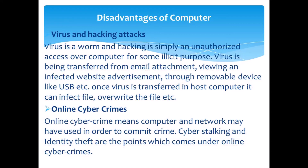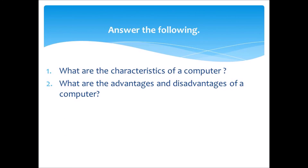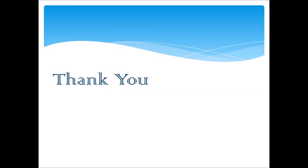Second, online cyber crimes. Online cyber crime means a computer and network may be used in order to commit a crime. Cyber stalking and identity theft are points which come under online cyber crimes. In this lecture, we have discussed the characteristics, advantages, and disadvantages of computers. Hope all of you have understood the lecture. Thank you.